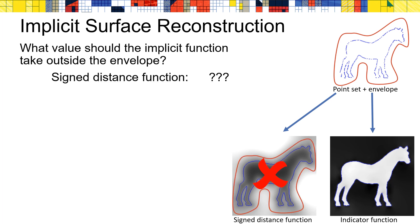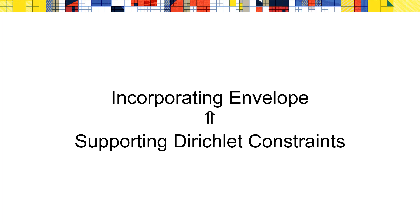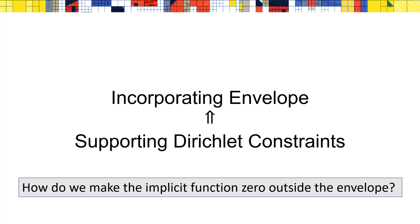One way to answer this is to think about what values we expect the implicit function to have outside the envelope. In the case of the signed distance function, this is a hard question to answer, since the values depend on the position of points on the reconstructed surface, which are only known once the reconstruction problem has been solved — creating a chicken-and-egg scenario. In the case of the indicator function, things are substantially simpler. Since we know that the envelope is outside the surface, the value of the implicit function at points outside the envelope must be uniformly zero. This leads to a very simple but powerful observation: if we can impose Dirichlet boundary constraints, forcing the implicit function to be zero everywhere outside the envelope, we automatically produce an implicit function whose 0.5 level set is interior to the envelope. So the question becomes: how do we force the implicit function to be zero outside the envelope?